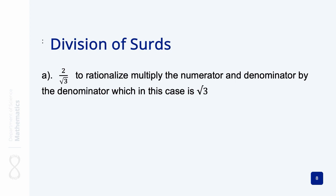We have two divided by the root of three. To rationalize this, we multiply both the two — which is the numerator — and the root of three — which is the denominator — by the root of three, which is the denominator. This gives us two times the root of three over the root of three times the root of three.